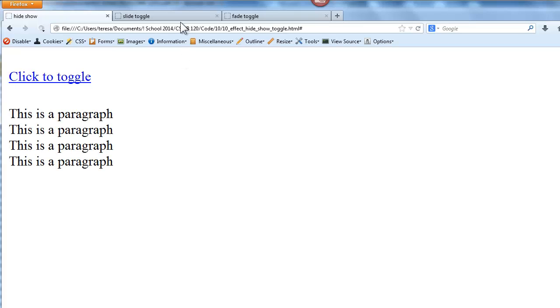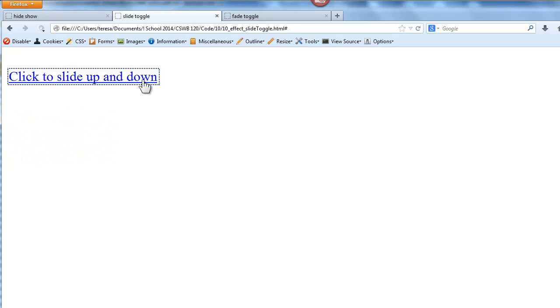Now let's take a look at slide toggle. Here is my paragraph. When I click, it will slide up. When I click again, it will slide down. Notice it is faster than the hiding and showing. They are both set at 500 milliseconds, which is half a second. You see more of a sliding effect here.